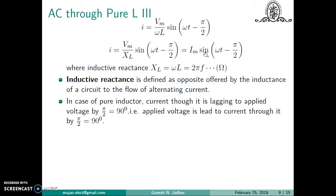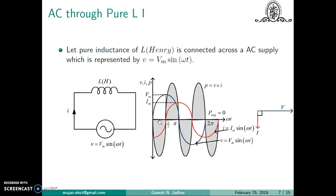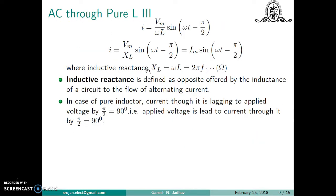The term (−π/2) means the current phasor lags the voltage by 90°. When voltage is maximum, current is zero; when voltage is zero, current is at its maximum. XL is known as inductive reactance, defined as the opposition offered by the inductance of a circuit to the flow of alternating current: XL = ωL = 2πfL. In a pure inductor, current lags the applied voltage by 90°.